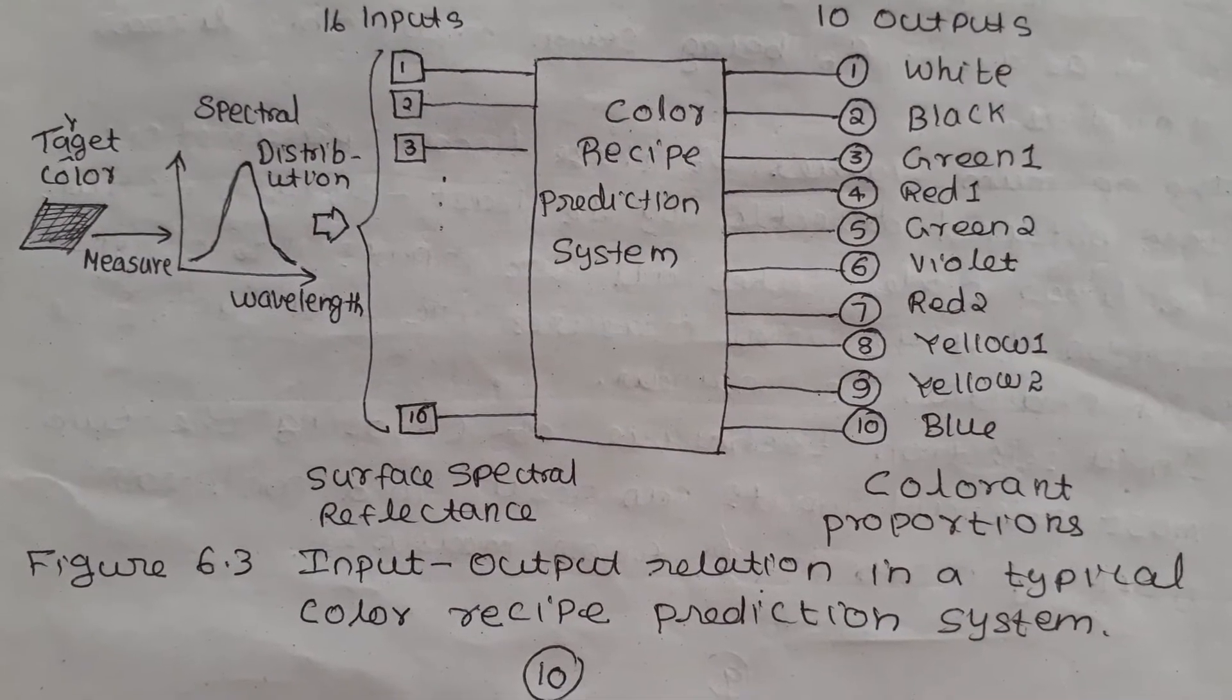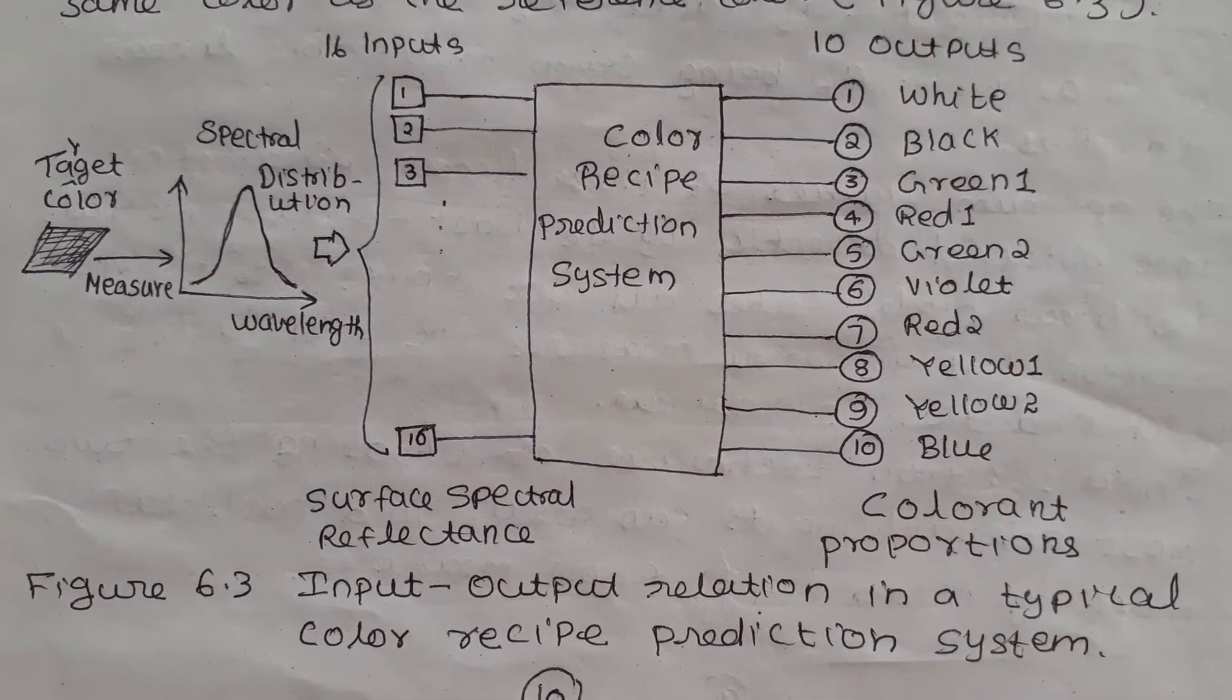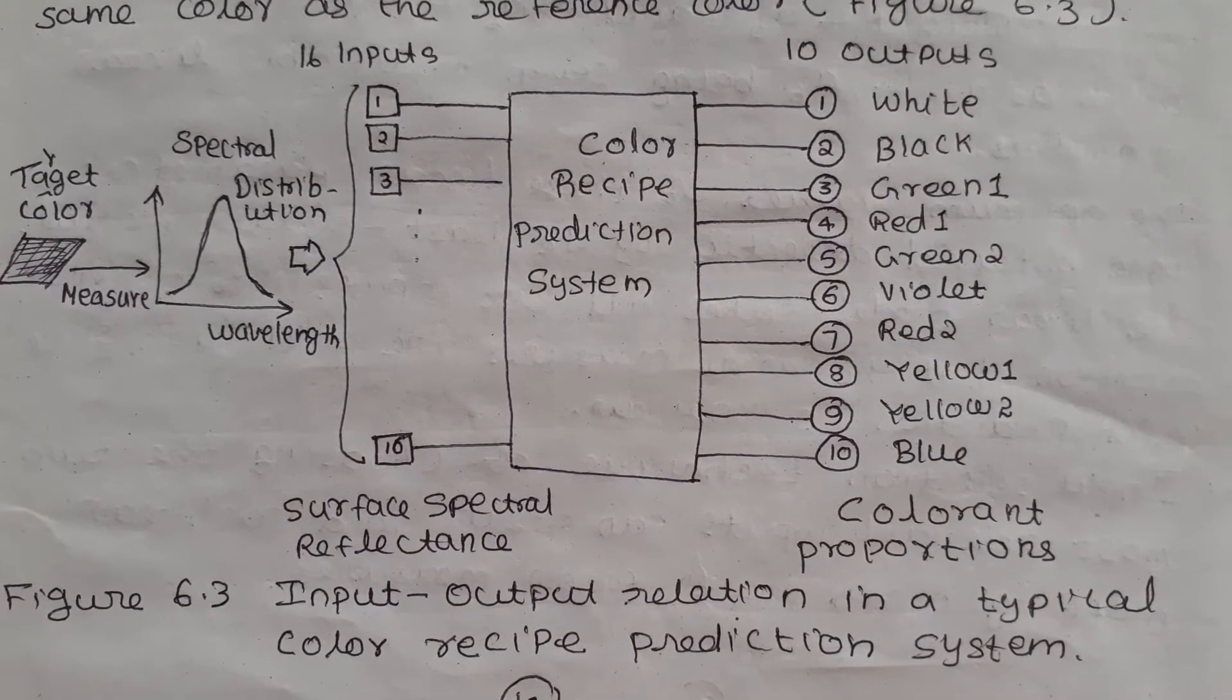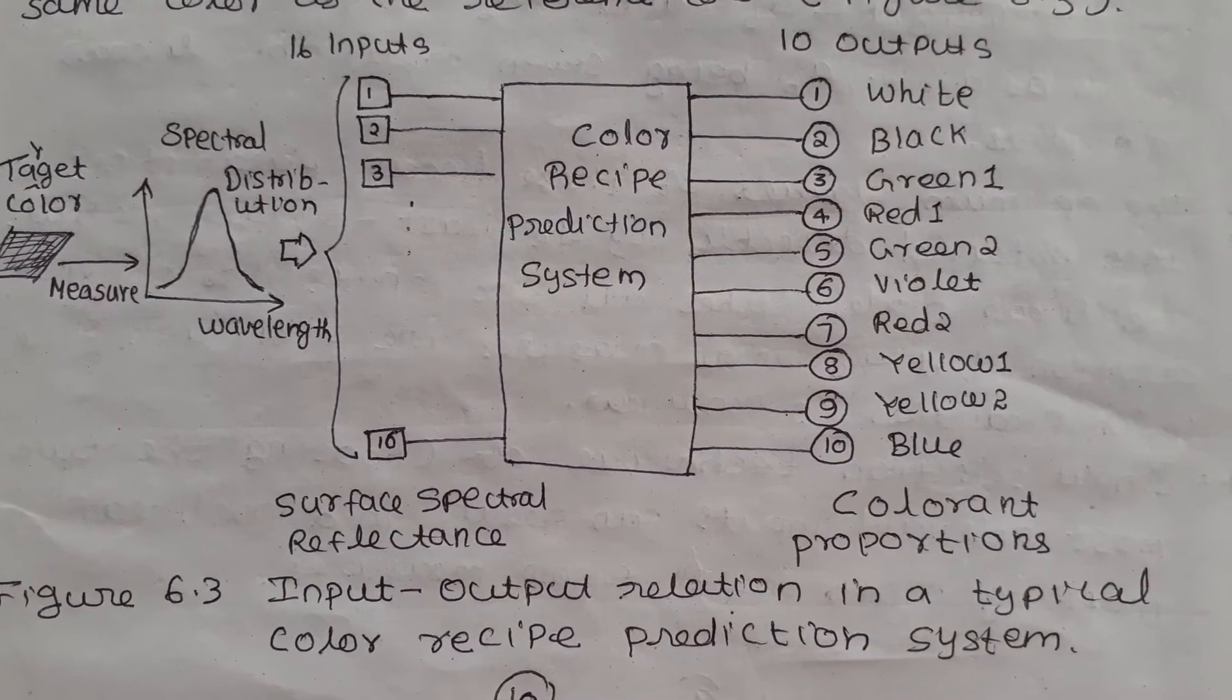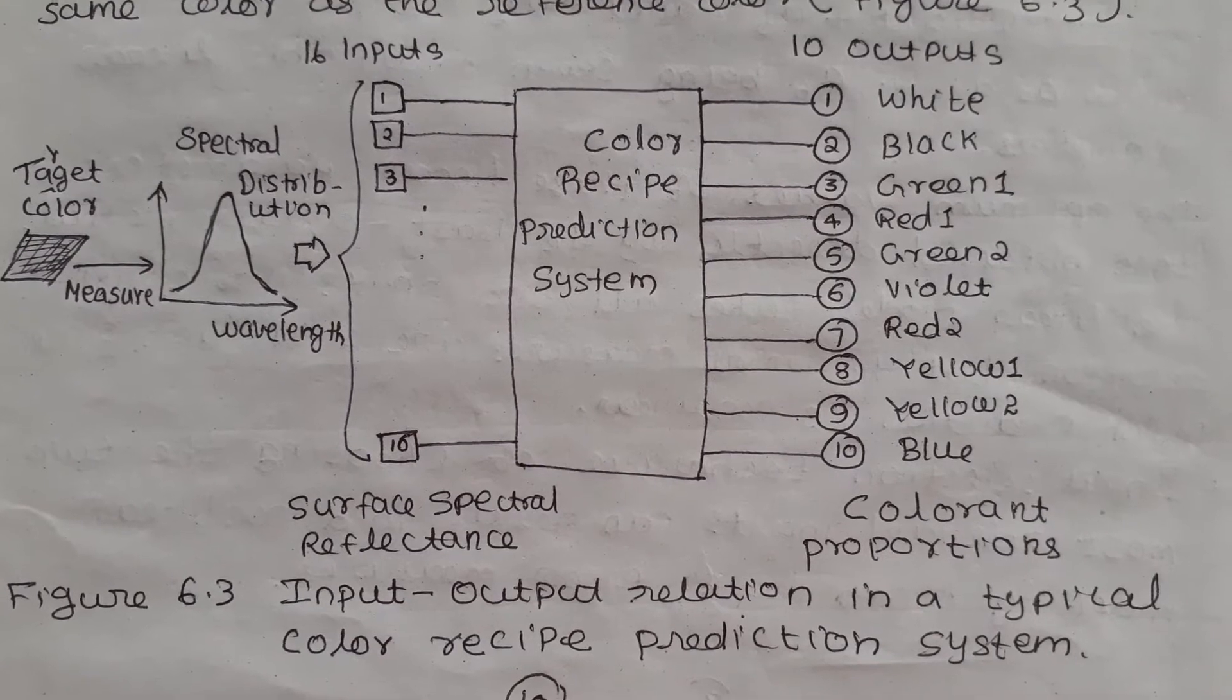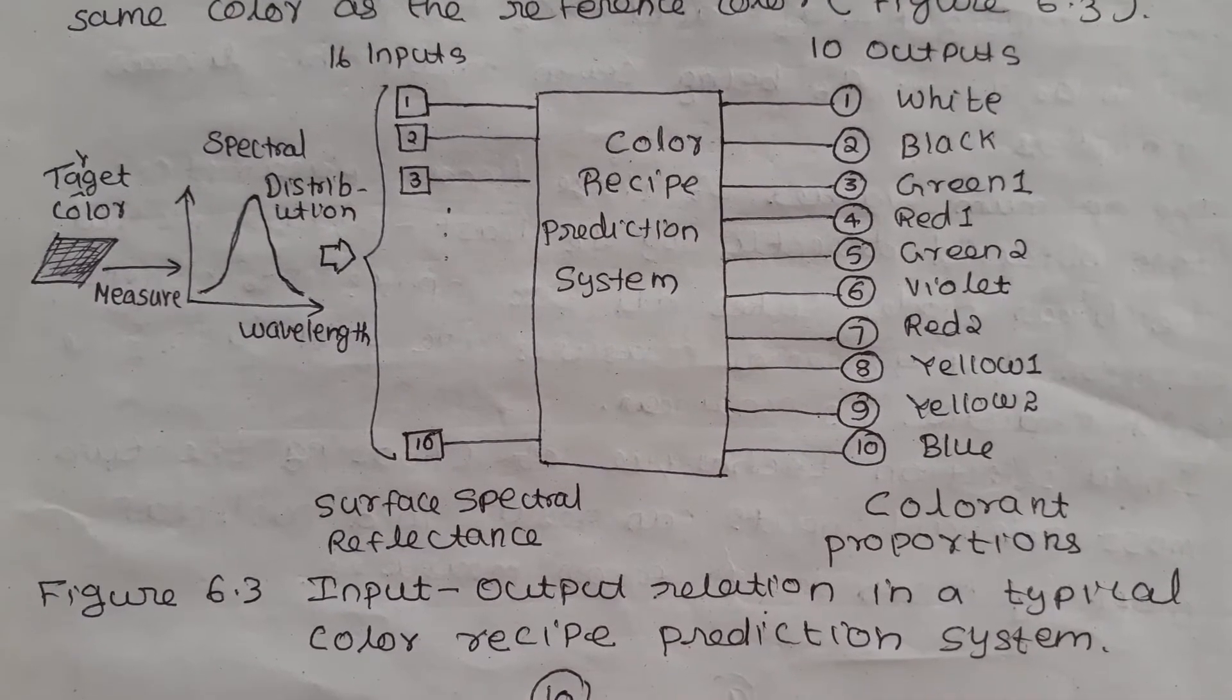Let us see the main concerns in recipe prediction. The first concern is it is difficult to predict precise color and concentration. We sometimes need to predict proportions with enough precision to specify levels such as 0.01 percentage, which is the desired minimal colorant proportion level.